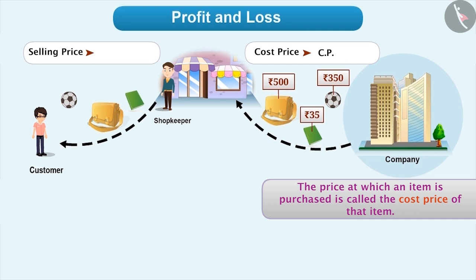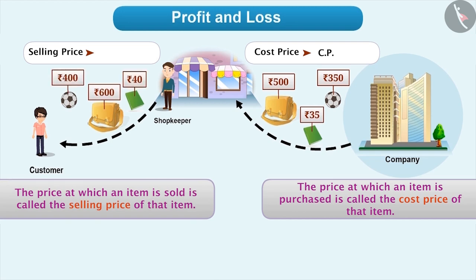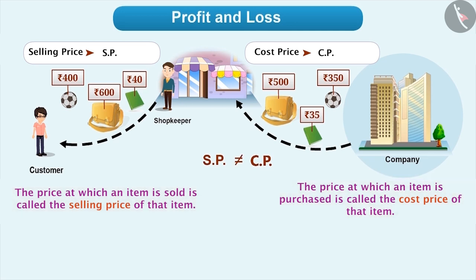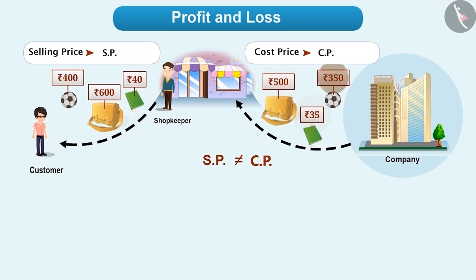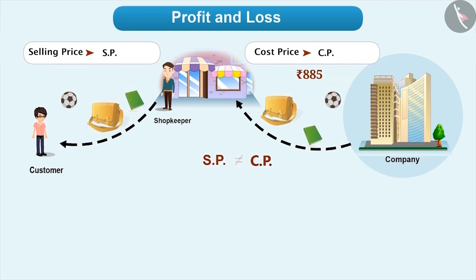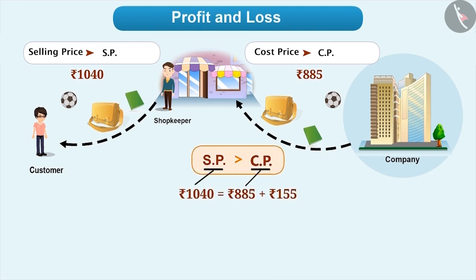The shopkeeper sells the items he purchases. Does the shopkeeper sell the item at the same price that he buys? No. Generally, any shopkeeper tries to sell an item at a price higher than the price purchased. That is, he tries to keep the selling price higher than the cost price. If the selling price is higher than the cost price, then the shopkeeper gets his cost price along with some extra money, which we call as profit. Therefore, we can say that profit is equal to selling price minus cost price.